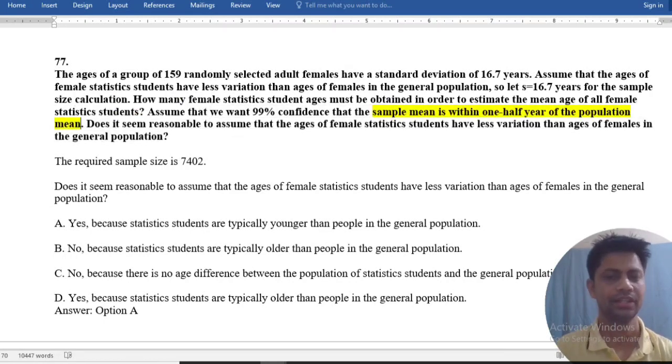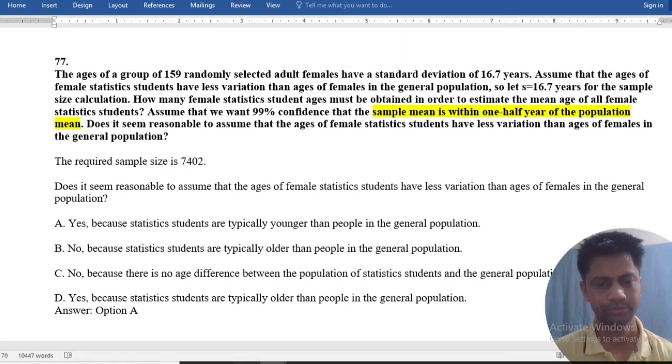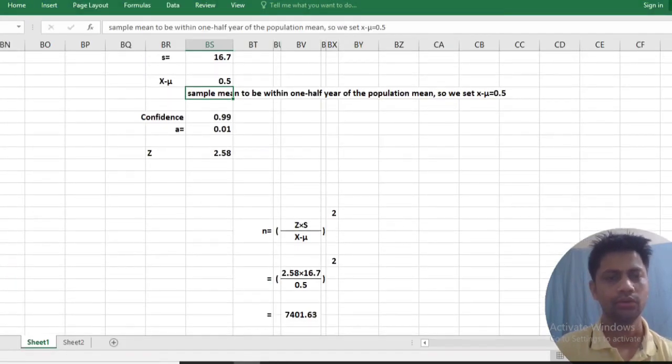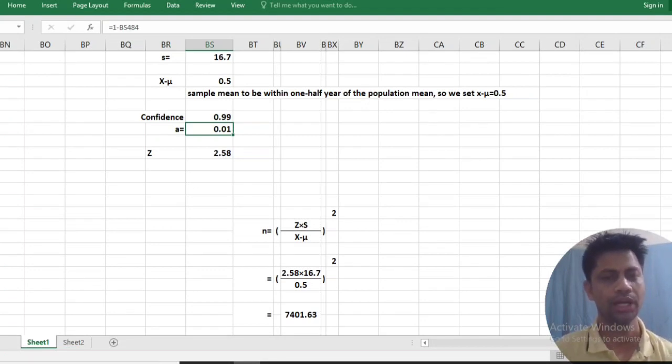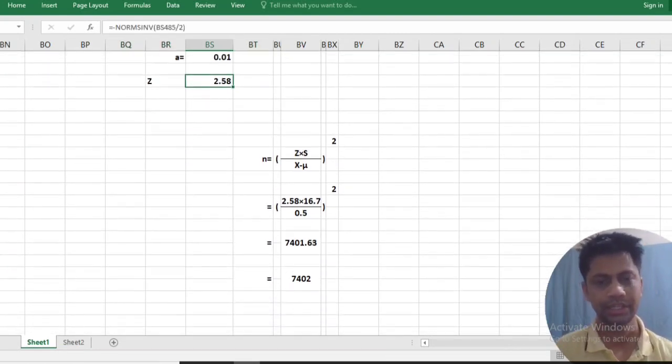This is the crucial point. Then confidence is 99%, so level of confidence alpha is equal to 0.01. And by using z table, I can calculate z equals 2.58.